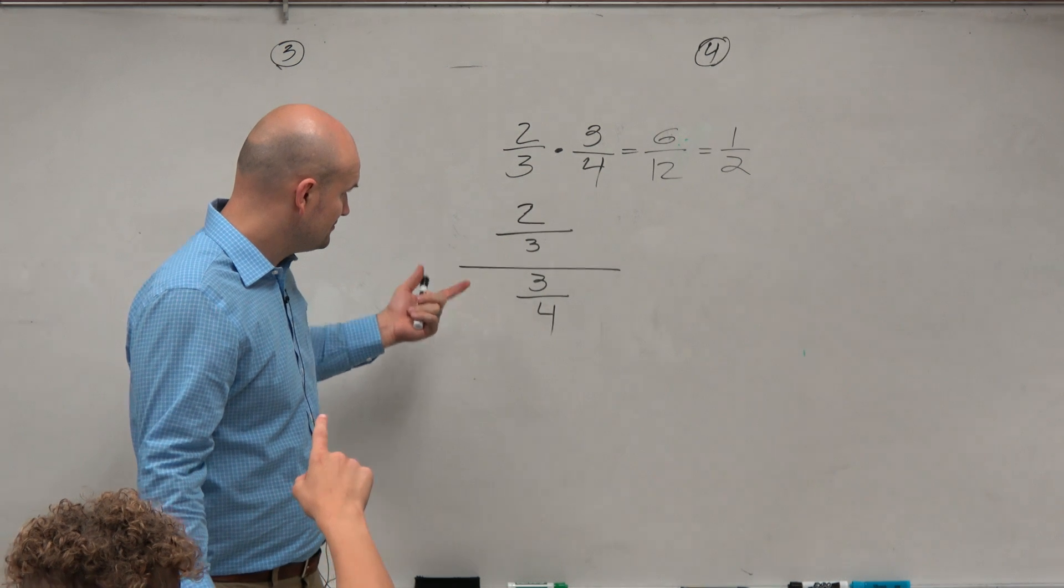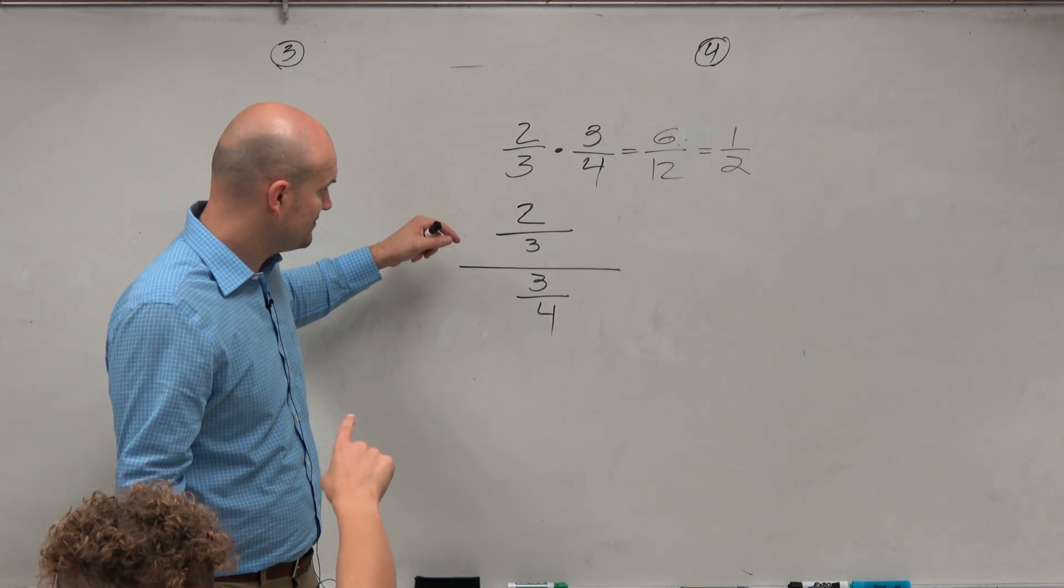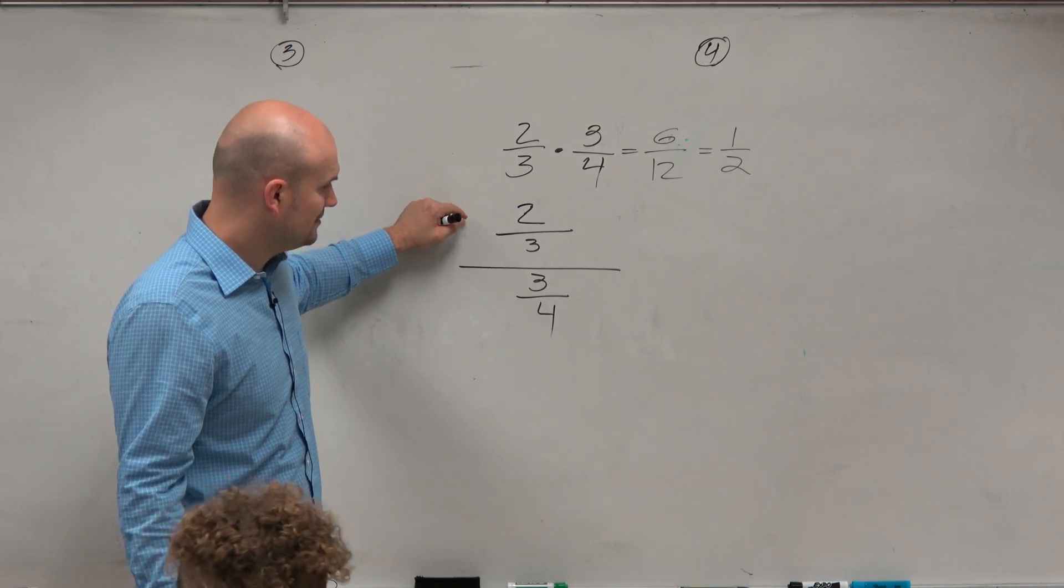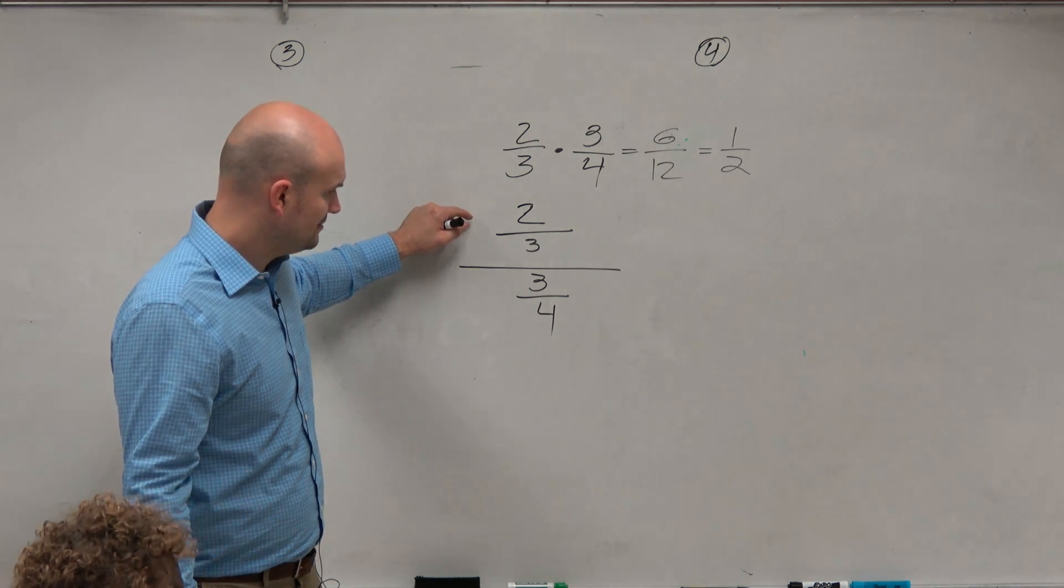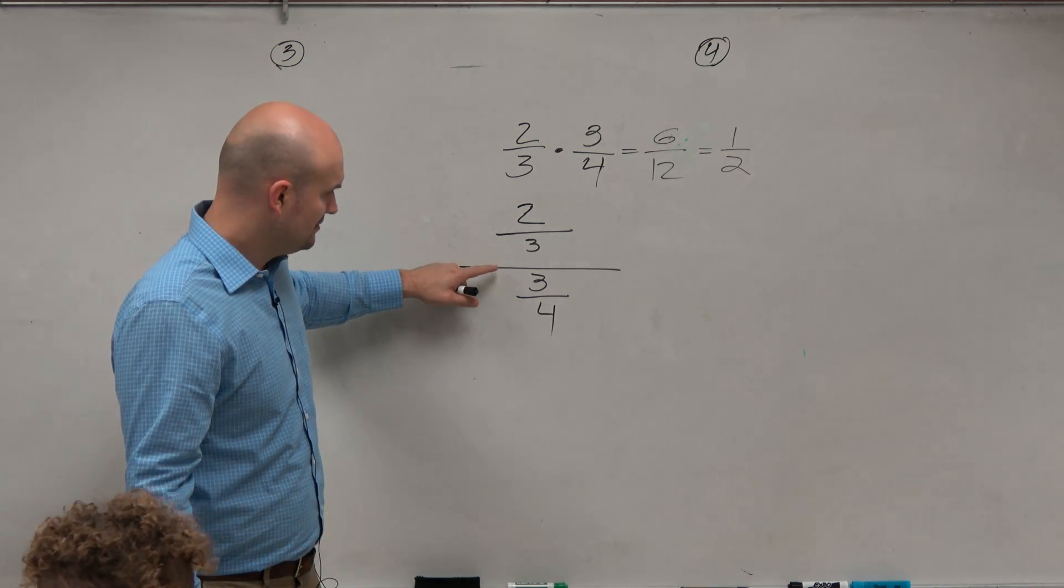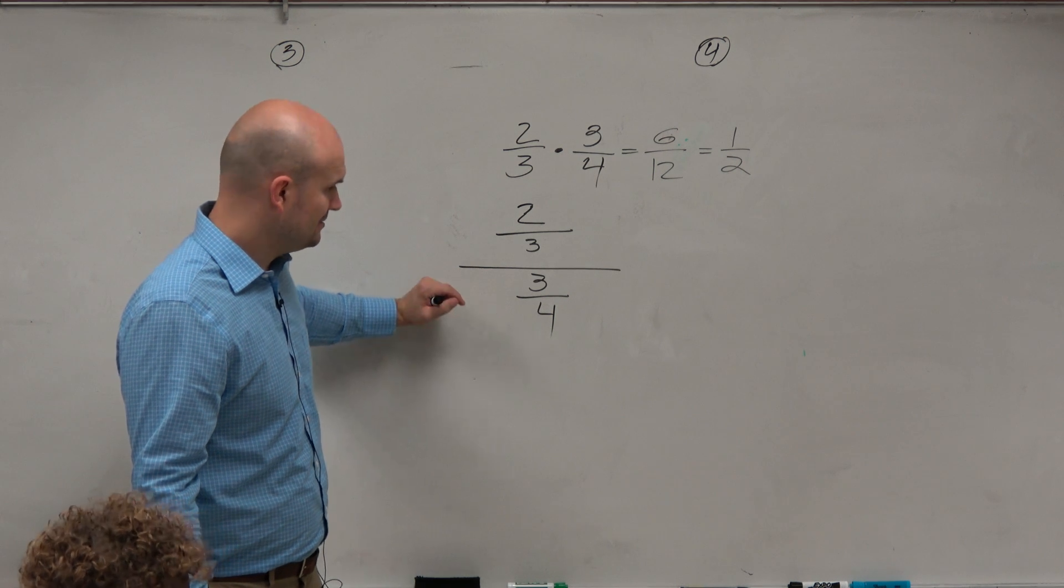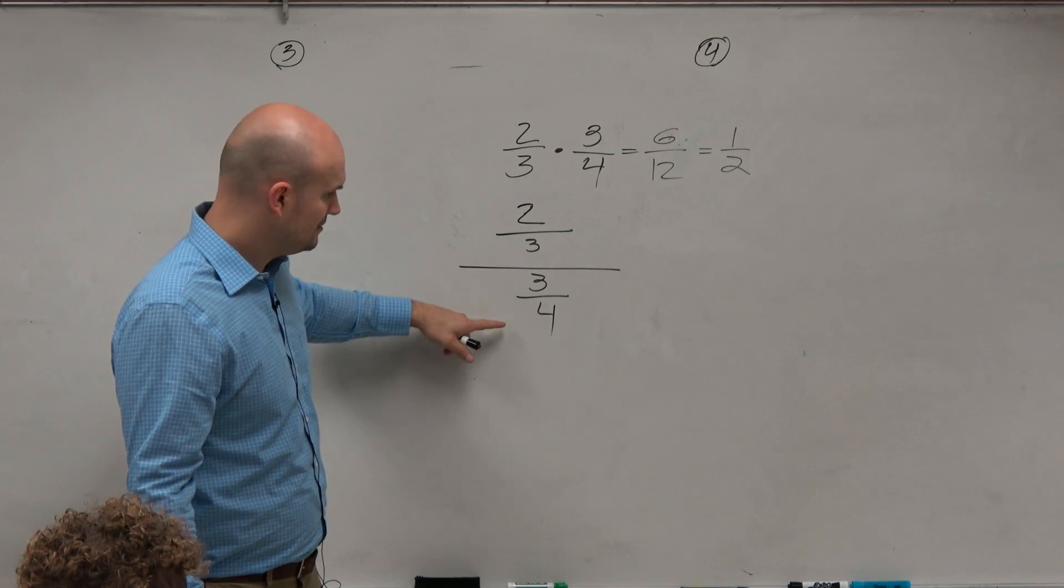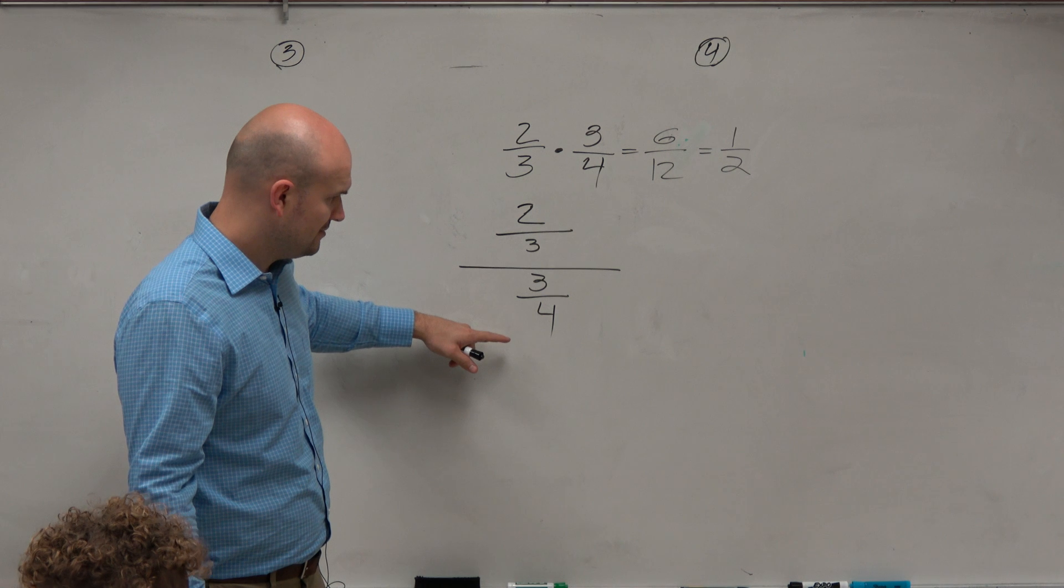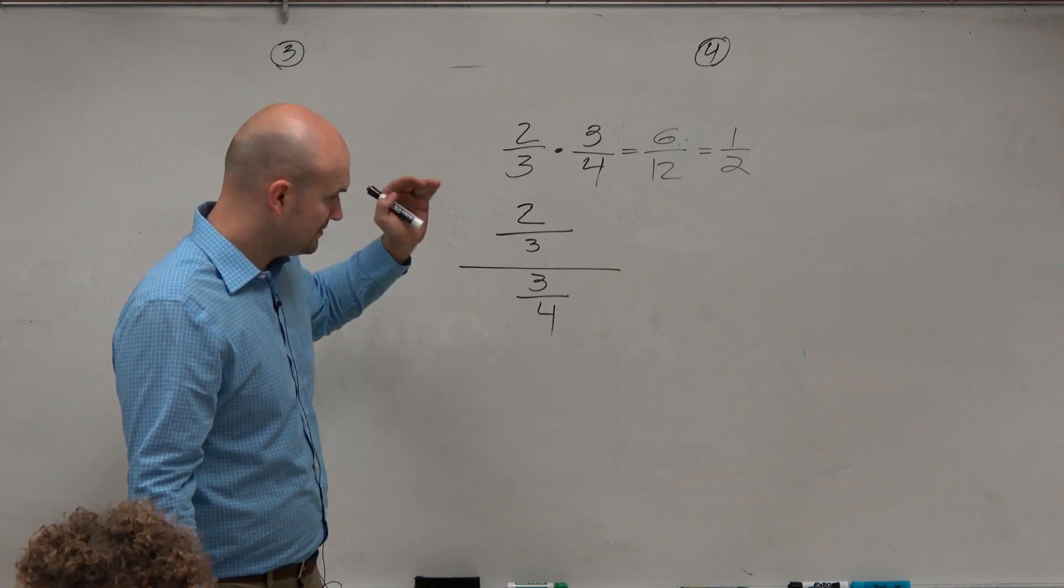All right. So you keep your first term. Which one's the first term? OK, the top one. OK. All right, then you're going to change the division sign, which is that big one. And you're going to change it into multiplication. OK. And then you're going to flip the fraction into a reciprocal. OK. And so it's 4 over 3.